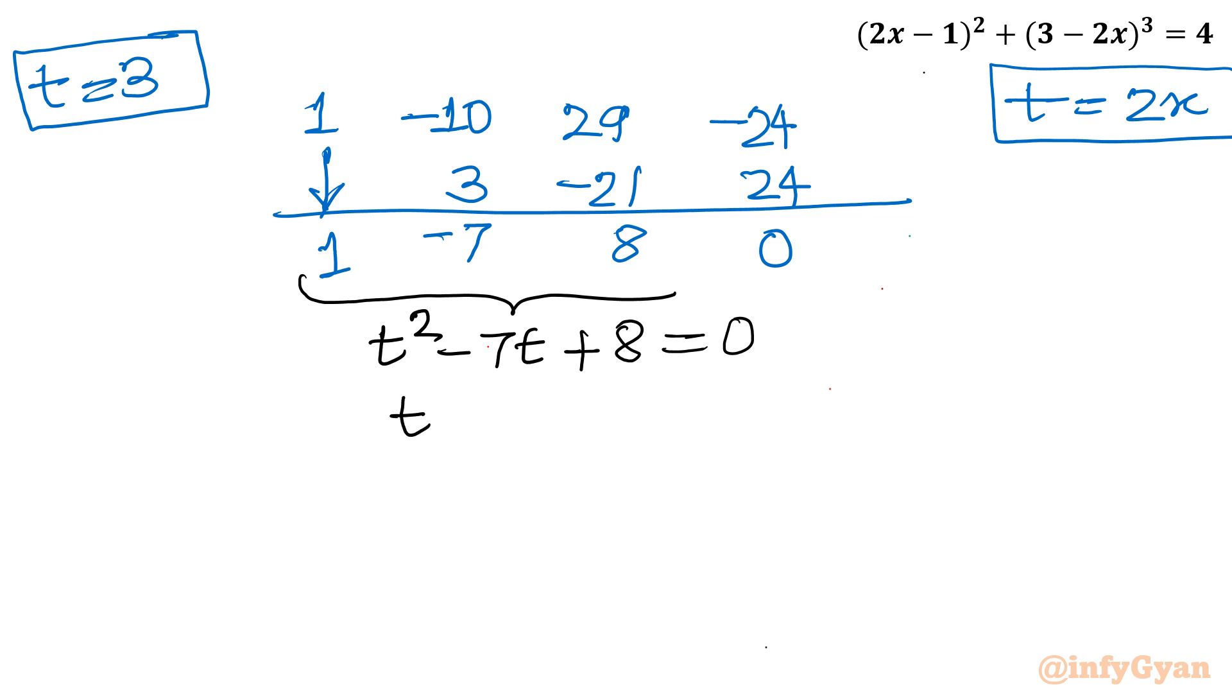Let us solve. It is same equation. Minus b plus minus square root b². So 49 minus 4ac, so 32, divided by 2. Let me write here itself. So what I will write? 7 ± √17 over 2. And remember what we calculated? That is t.